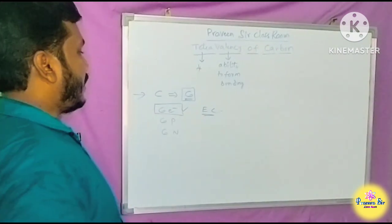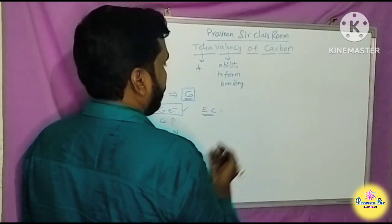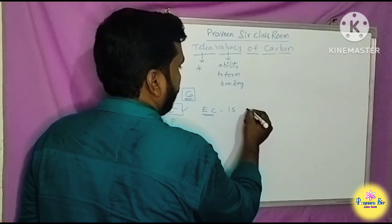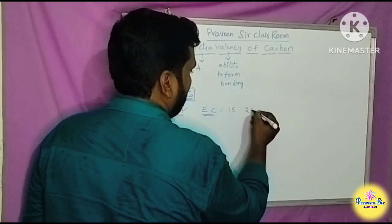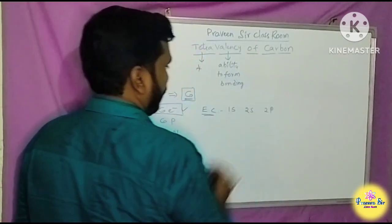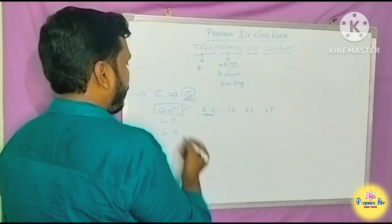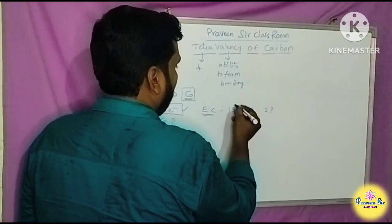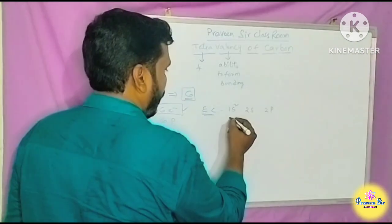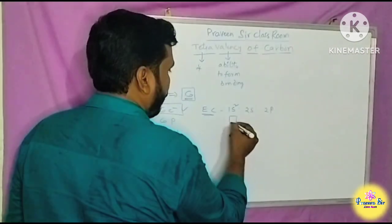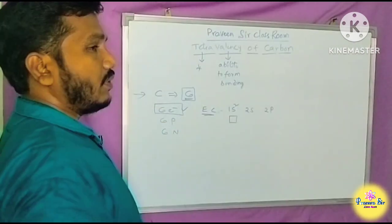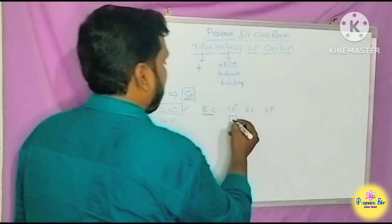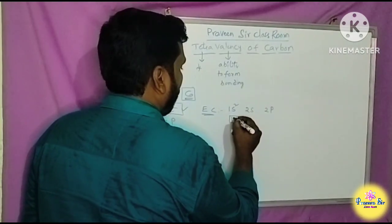Carbon has 6 electrons total. The 1s orbital has 1 orbital — 1 box — and can hold a maximum of 2 electrons.